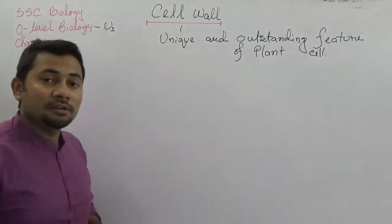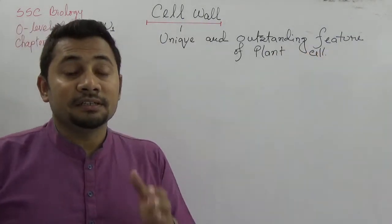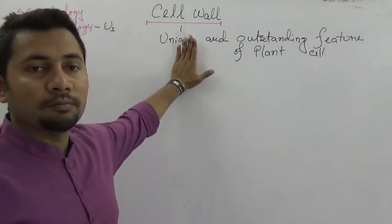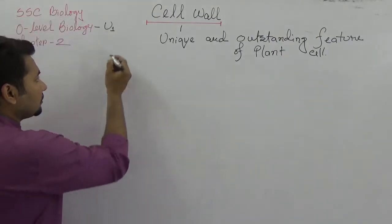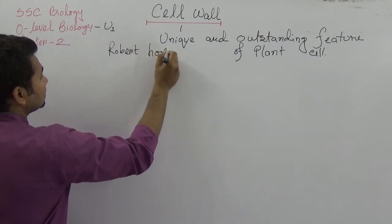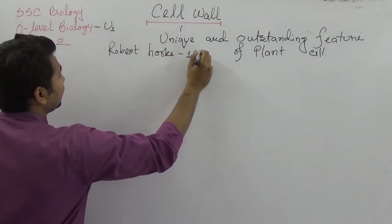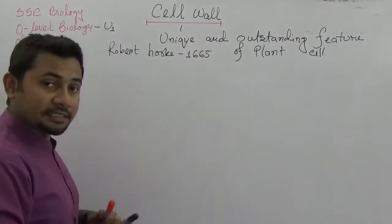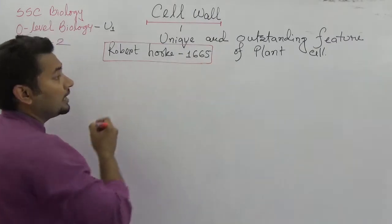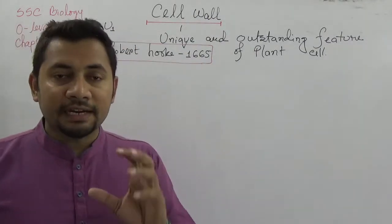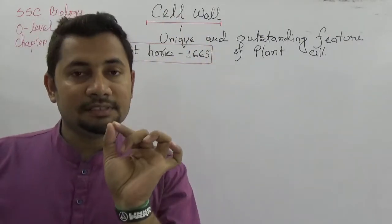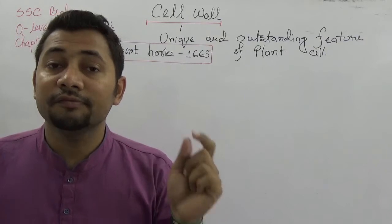The most important variation distinguishing plant cell from animal cell is the cell wall. Robert Hooke, in 1665, first discovered the cell wall, which is the outermost layer of the plant cell. Understanding this — the cell wall is the outstanding and unique feature of plant cell.